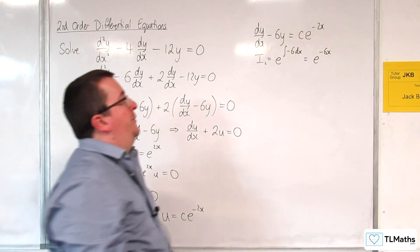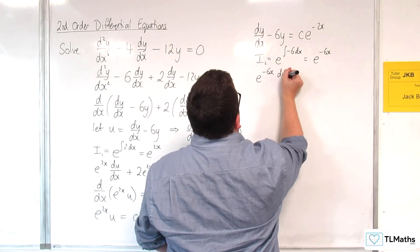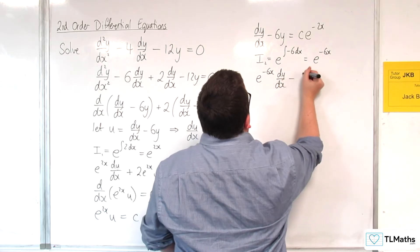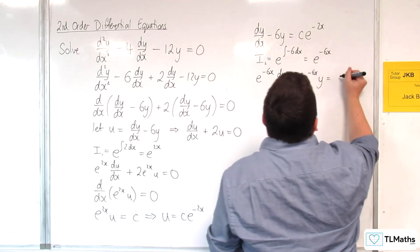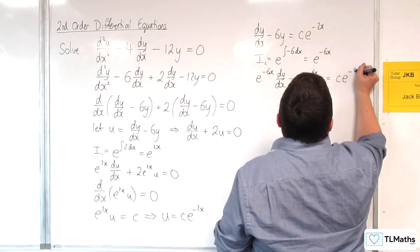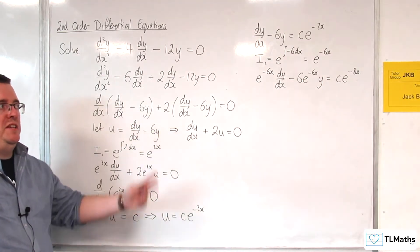So I'm going to multiply through by e^(-6x). So e^(-6x)dy/dx - 6e^(-6x)y is equal to ce^(-8x). Because I've got the e^(-2x) times e^(-6x).